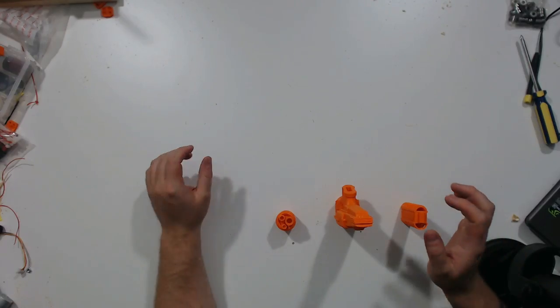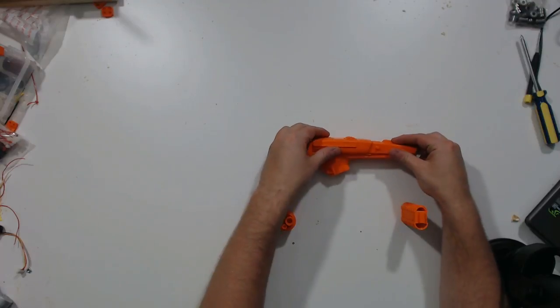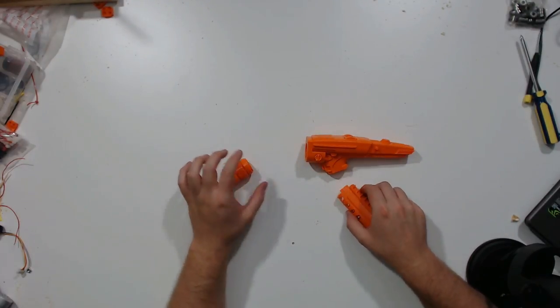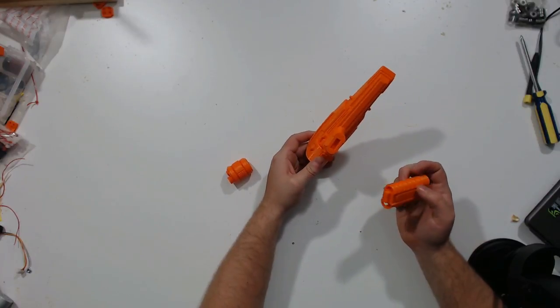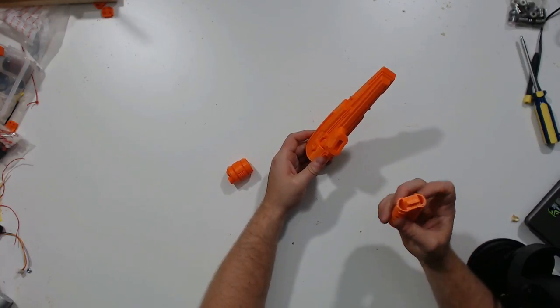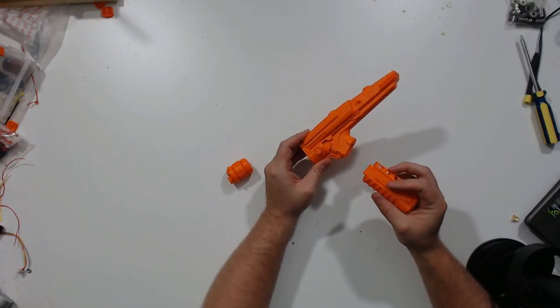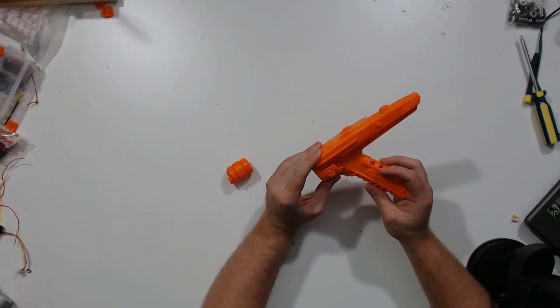And here we have our three parts. We have the main body of the gun, we have the handle, and we have the barrel. The handle and the main body of the gun have this little tab to make them go together, so all you have to do is turn it so that it's properly oriented, and stick it in.